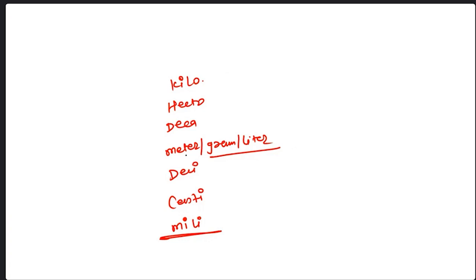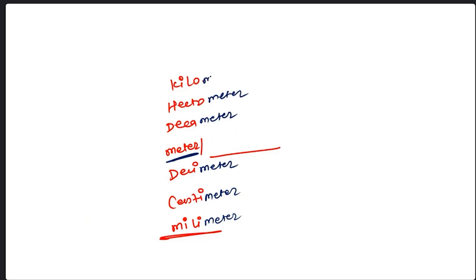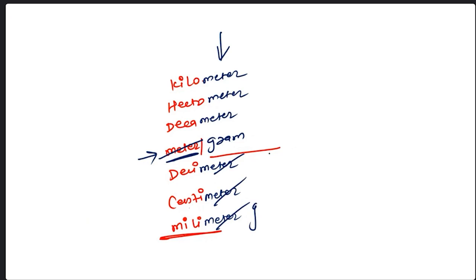Before discussing this, if the base unit is meter, then this table gives: millimeter, centimeter, decimeter, meter, decameter, hectometer, kilometer. This last term depends on what you are writing. If it is gram instead of meter, then all these become milligram, centigram, decigram, gram, decagram, hectogram, kilogram.